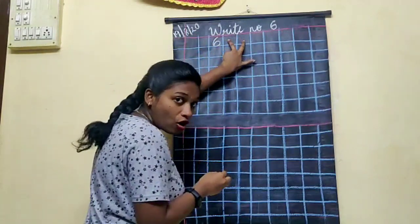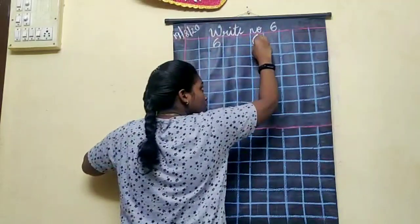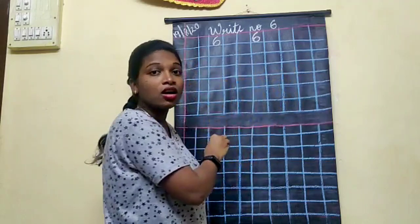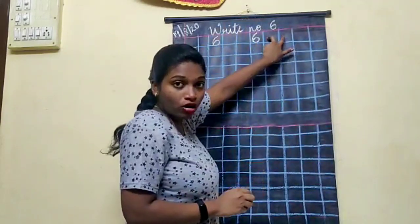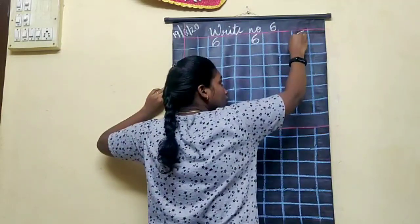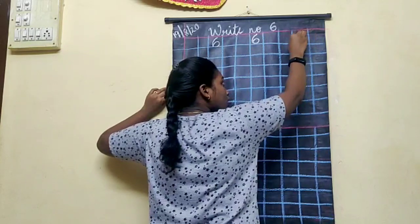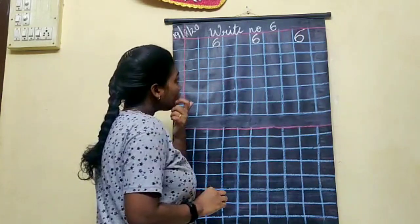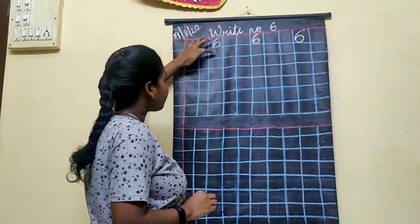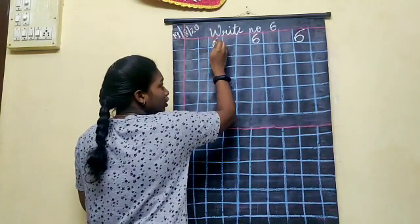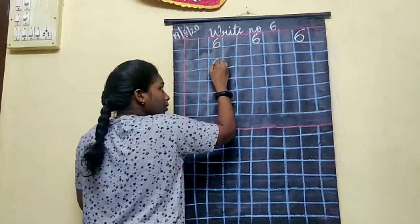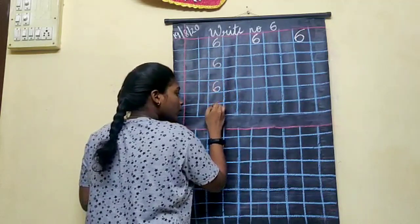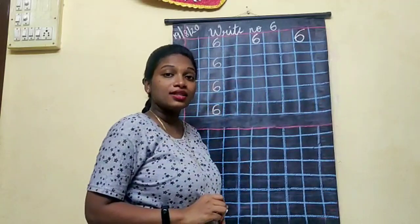Then again leave two boxes and write number six. That is a curve, and then put a small circle inside the curve. Then again leave two boxes and write curve, then put a small circle inside the curve — number six. Number six has six objects. Now leave one space below and start writing. Below the six, leave one square box and write number six.